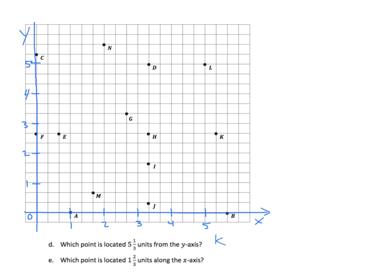Which point is located 1 and 2-thirds units along the x-axis? Notice that we're not saying from, we're saying along. So we're going to go to the x-axis and go 1 and 2-thirds along that. Looking at that vertical line once again, we look for a point on this vertical line. The answer is M. We need to pay close attention to words here — this stuff gets easily confusing. Hopefully, you will refer to these videos when you're doing your homework.